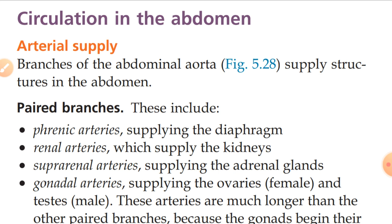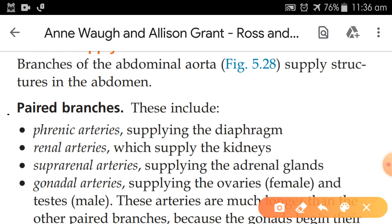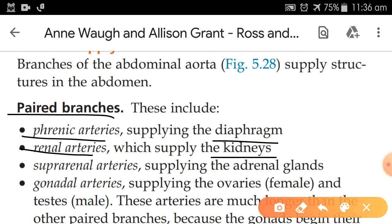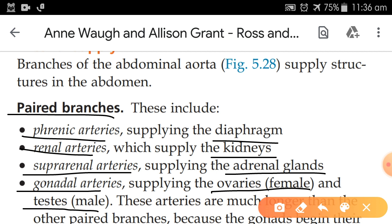There are two categories of branches. The first category is the paired branches. The first paired branch is the phrenic artery, which supplies the diaphragm. The renal artery supplies the kidneys. The suprarenal artery supplies the adrenal gland. The gonadal artery supplies the gonads — ovaries in females and testes in males.